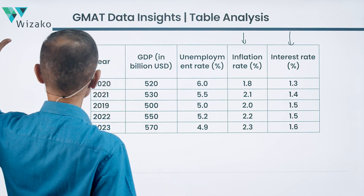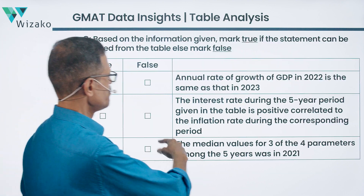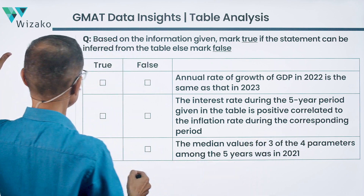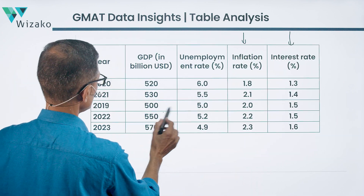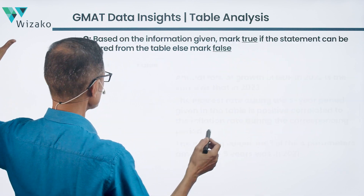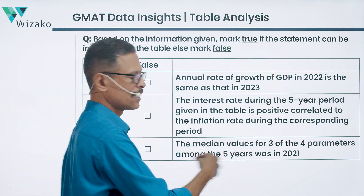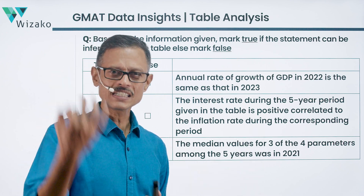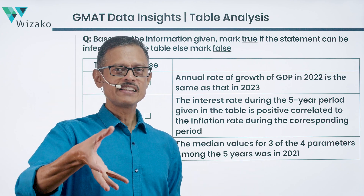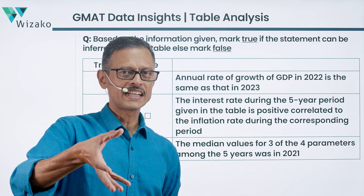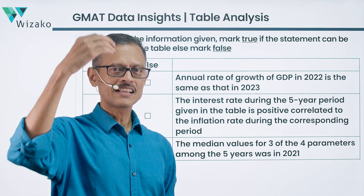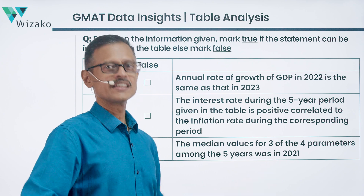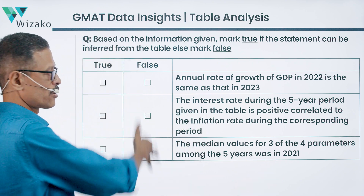The third statement looks at the median values for three of the four parameters — GDP, unemployment rate, inflation rate, and interest rate. It states that the median value among the five years happened to be in 2021 for three out of four parameters. When sorted in ascending order, the third value in the sequence should correspond to 2021 for three of the four parameters. Classify this statement as true or false.